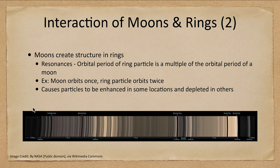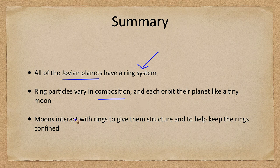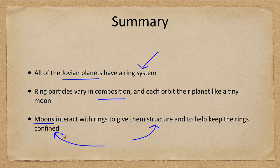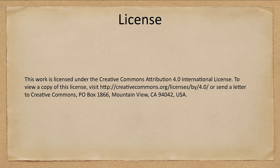So let's finish up with our summary. All of the Jovian planets have a ring system. The ring particles vary in composition but each orbits the planet like a tiny moon — billions of moons around each of these planets. The moons interact with the rings to give them structure, keep the rings confined and in place, and allow them to exist over much longer time frames. That concludes this lecture on planetary rings. We'll be back again next time for another topic in astronomy — have a great day everyone, and I will see you in class.